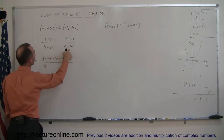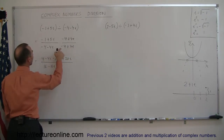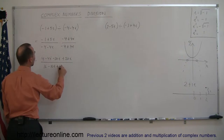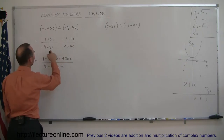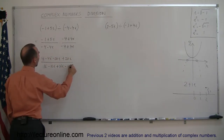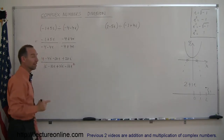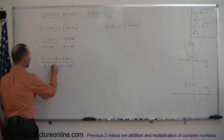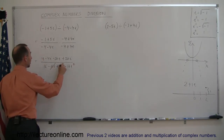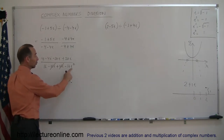Minus 4 times 4i is minus 16i. Minus 4i times minus 4 is plus 16i. And minus 4i times plus 4i is minus 16i squared. In the denominator, the minus 16i cancels out the plus 16i, and the imaginary part is gone.